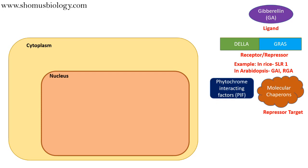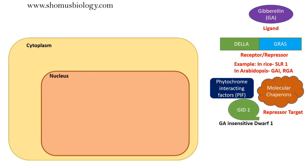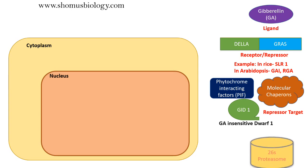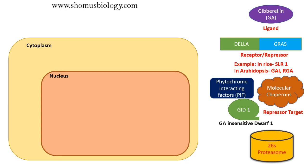The DELLA repressor targets phytochrome interacting factors (PIF) as well as the molecular chaperones present in the plant cell — those are the targets of the DELLA repressor. Then come the transcription factors: GID1 protein (GA insensitive dwarf 1 protein) and the 26S proteasome complex. These are the components involved in the process of gibberellic acid signaling.